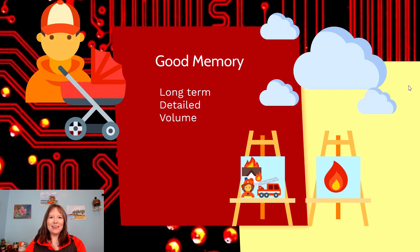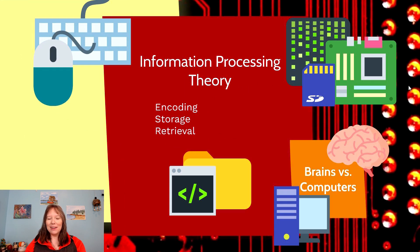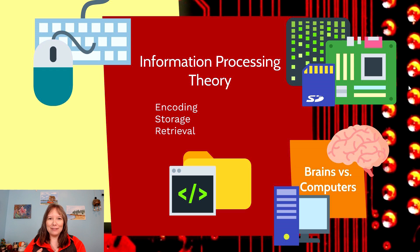Now that we've discussed what a good memory is, how does memory actually work? One theory is the information processing theory. This theory was developed decades ago when computers and knowledge about the brain were quite different than they are today. The core idea is that our brains are very similar to computers.